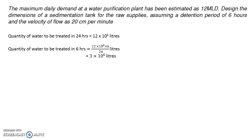So the quantity or capacity of that particular rectangular sedimentation tank is 3 × 10⁶ liters, or 3000 cubic meters — since 10³ liters equals one cubic meter, giving us 3 × 10³ cubic meters, i.e., 3000 m³.